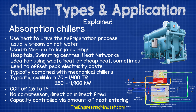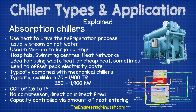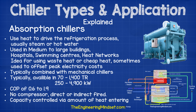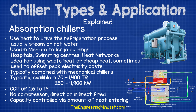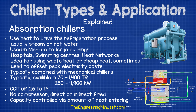Absorption chillers use heat to drive the refrigeration process — usually steam or hot water. They're used in medium to large buildings such as hospitals, swimming centers, and heat networks. They're ideal for using waste heat or cheap heat, and are sometimes used to offset peak electricity costs. They're typically combined with mechanical chillers. You can typically buy these from 70 to 1,400 tons or 250 up to 4,900 kilowatts. They have a very low COP of 0.6 up to 1.9. They have no compressor, are either direct or indirect fired, and capacity is controlled by varying the amount of heat entering the chiller.